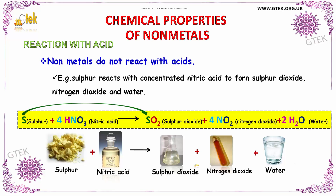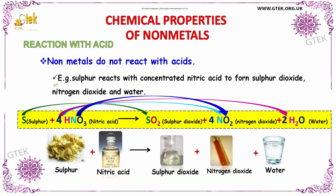Now let us see about the chemical property of a non-metal with reaction of an acid. Non-metals do not react with acids. For example, sulfur reacts with concentrated nitric acid to form sulfur dioxide, nitrogen dioxide, and water. Sulfur plus nitric acid gives SO2 plus NO2 plus H2O. This is the process of a non-metal when it is reacted with an acid.